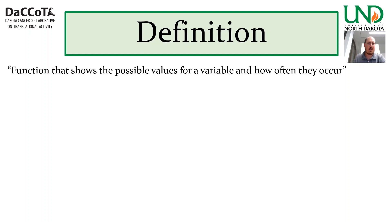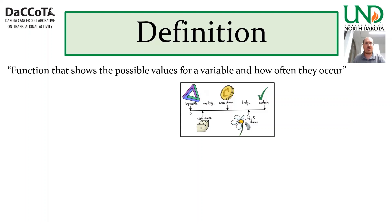Let's take a stab at a definition. One definition is: a statistical distribution is a function that shows the possible values for a variable and how often they occur. A big part of statistics is trying to estimate the likelihood of a certain event, or how likely a certain variable is to fall within a certain value — from essentially zero probability to certain probability, and anywhere in between. A statistical distribution as a function helps tell you, depending on the value, how likely it is.